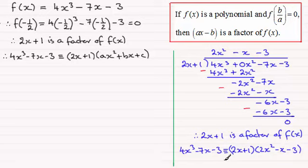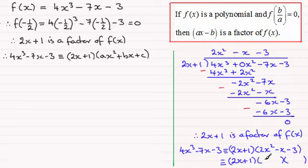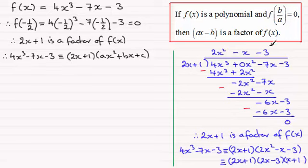We can factorize that quadratic factor further. We have the linear factor 2x plus 1, and factorizing 2x squared minus x minus 3 gives two brackets: 2x and x to get the 2x squared, and minus 3 and plus 1 for the constant term. Checking: 2x times 1 gives 2x, minus 3 times x gives minus 3x, and 2x minus 3x is minus x. So f(x) is fully factorized.